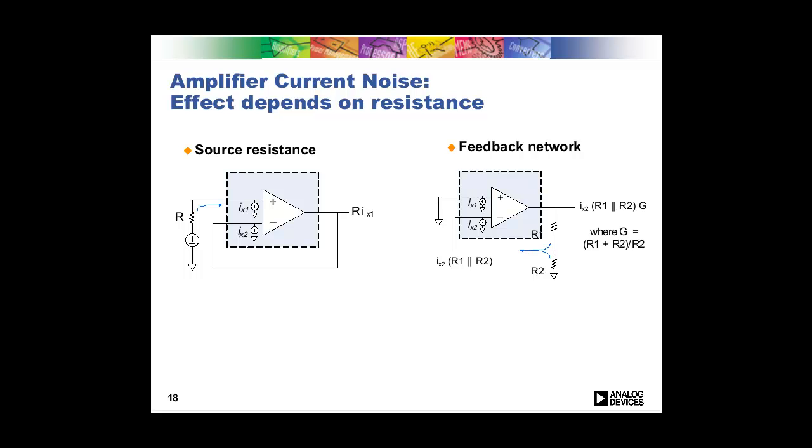And the reason that current noise is important is because that current flows through resistance at the inputs. So typically when you are figuring out the noise for a signal chain, you want to do everything in the same units, which are typically volts RMS. So the first thing that you do is you go convert all of these currents into voltages. And you do that by multiplying the current by the resistance at the inputs. So there's two cases where you'll have resistance at the inputs. One is when you have a source resistance. And the other case is when you have a feedback network.